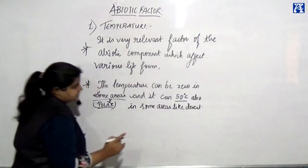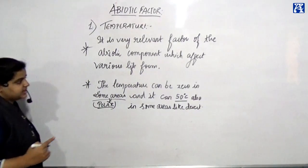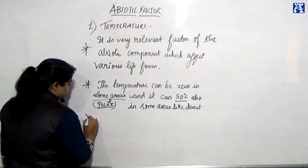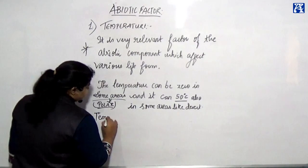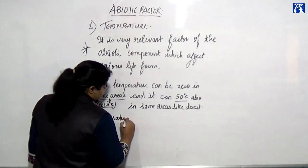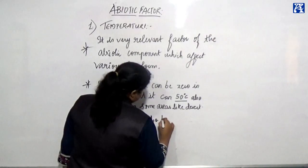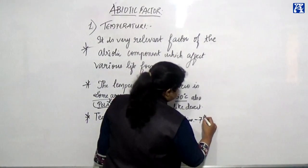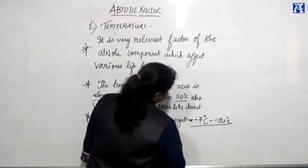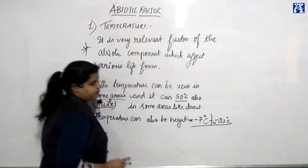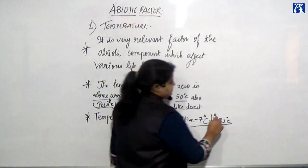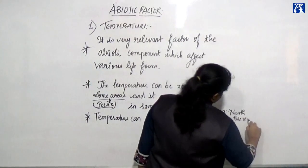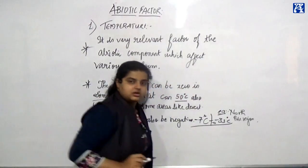Temperature can also be negative. In the arctic region, temperature ranges from minus 7 degrees Celsius and can go down to minus 33 degrees Celsius. For example, in the arctic or north pole region — also written as the arctic circle.